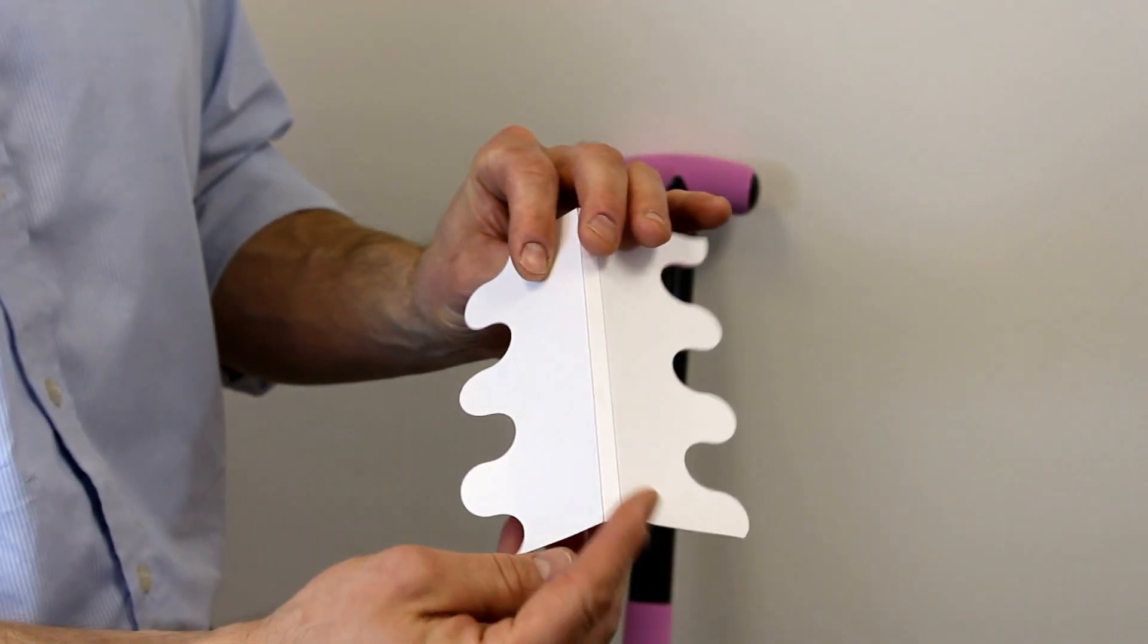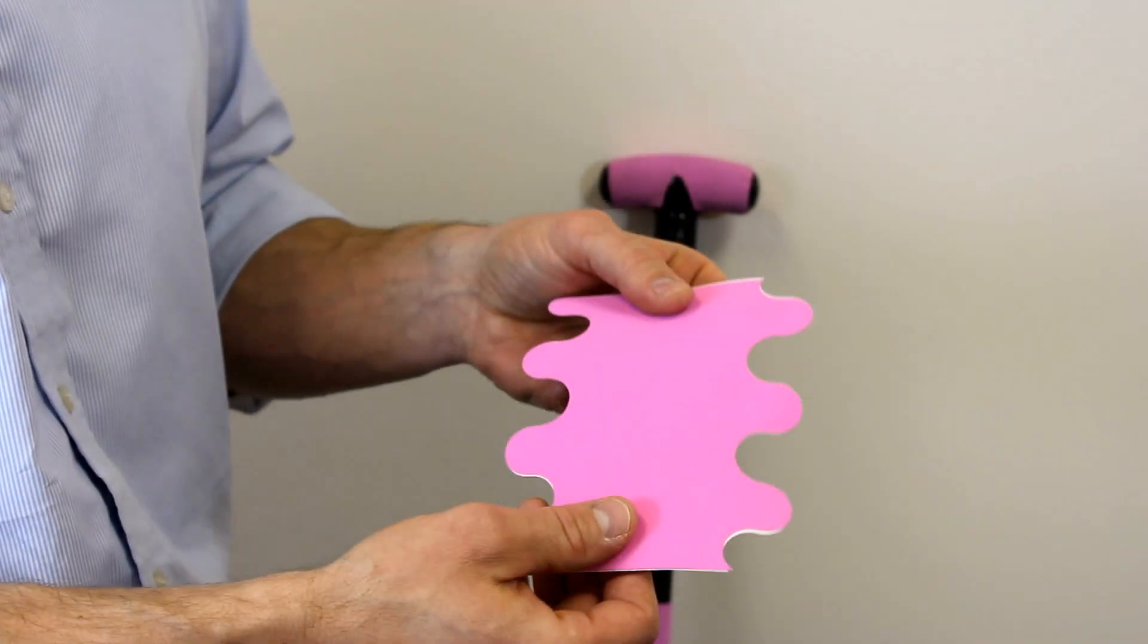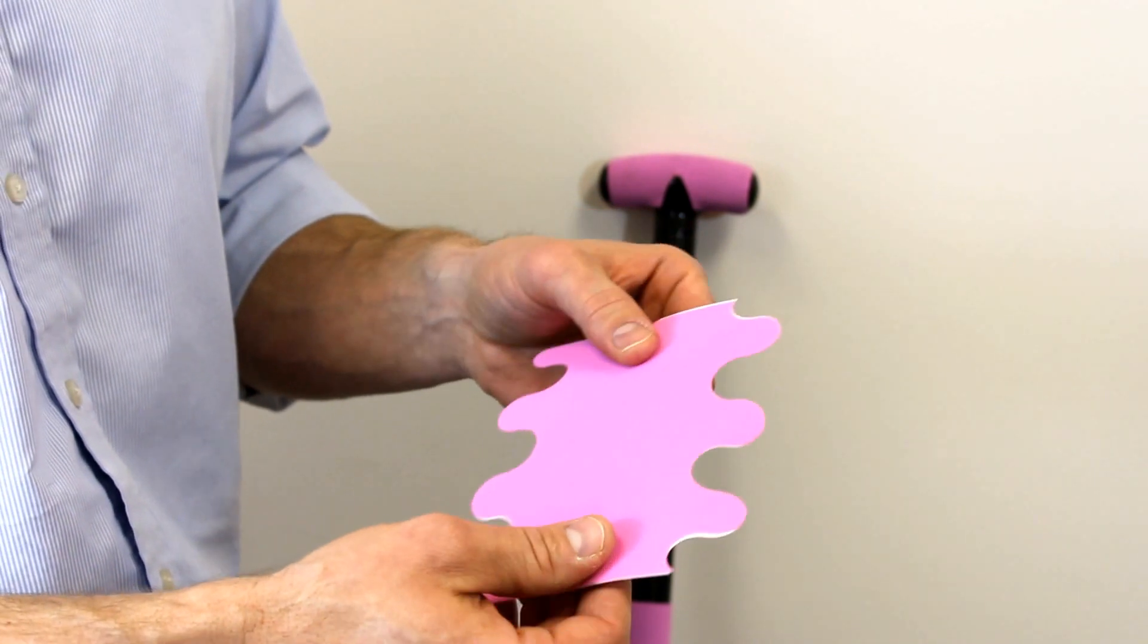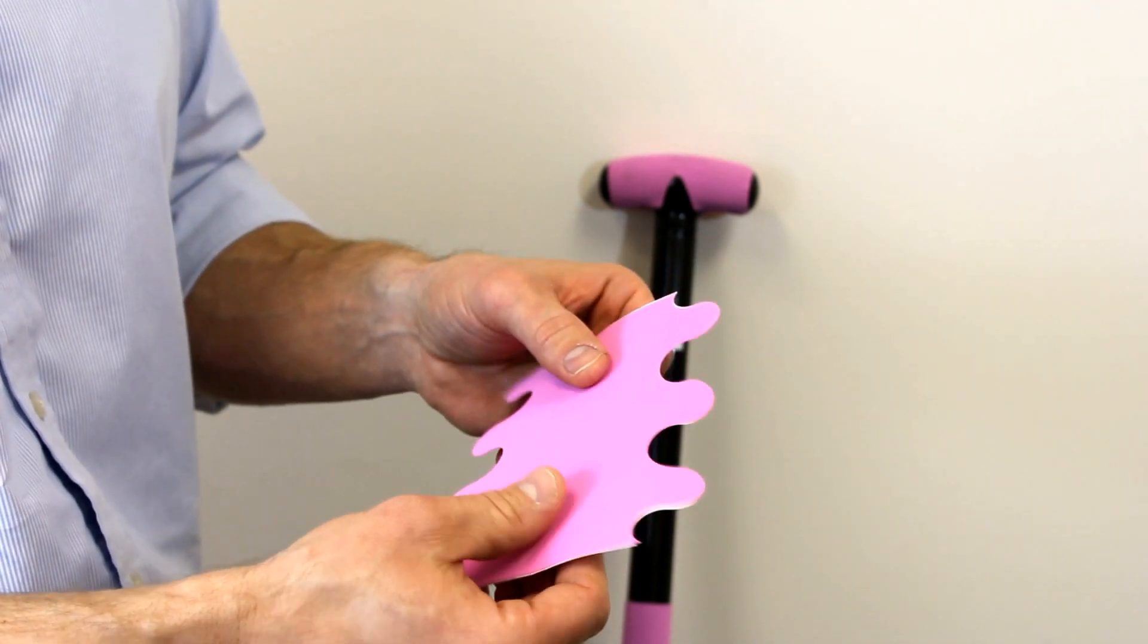Hi, today we're going to show you how to put on Hold Fast paddle grips to your paddle. Essentially it's a grip material that you apply to your paddles and it gives you really good grip. It reduces fatigue and reduces blisters.